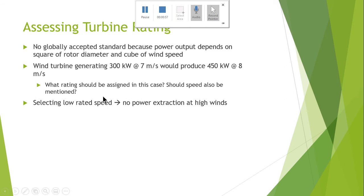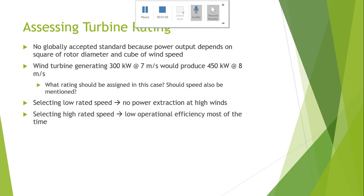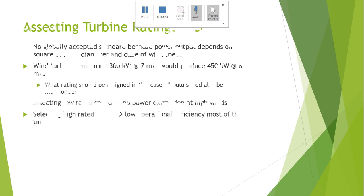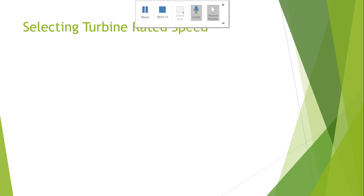If we select a low rated speed, there will be no power extraction at higher wind speeds. Similarly, if we select a high rated speed, the low operational efficiency will be lost for most of the time. I will continue with selecting the turbine rated speed.